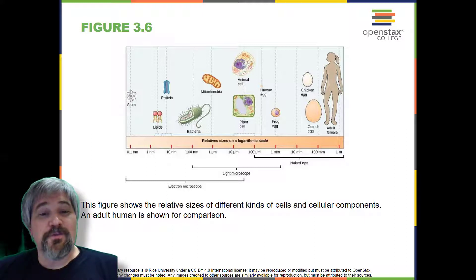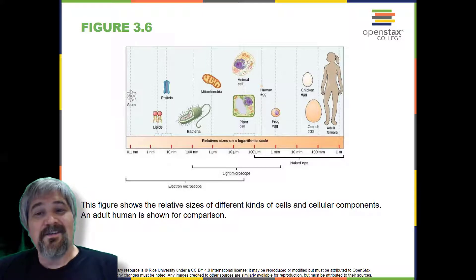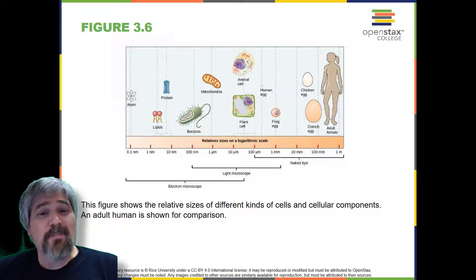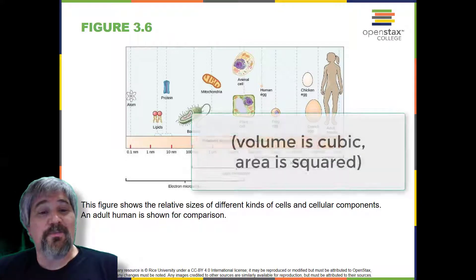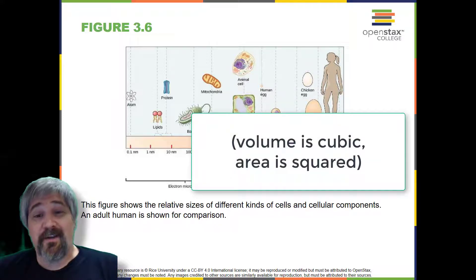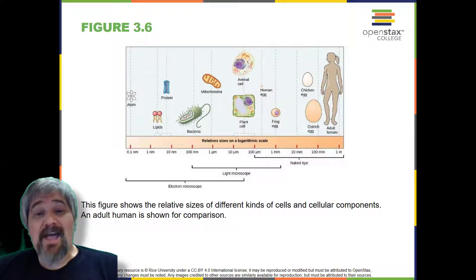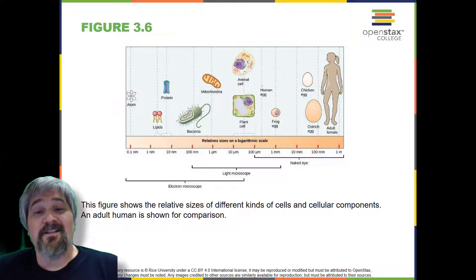However, larger eukaryotic cells have evolved different structural adaptations to enhance cellular transport. Indeed, the large size of these cells would not be possible without these adaptations. In general, cell size is limited because volume increases much more quickly than does cell surface area. As a cell becomes larger, it becomes more and more difficult for the cell to acquire sufficient materials to support the processes inside the cell, because the relative size of the surface area across which materials must be transported declines.